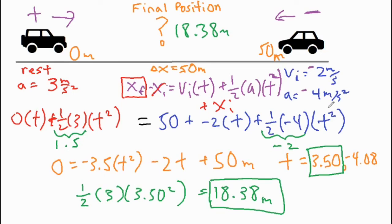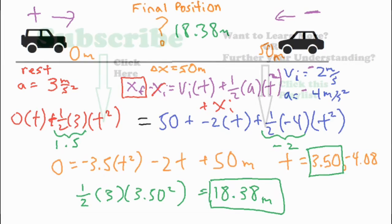That also lines up with what I predicted, because this car has a starting velocity and a greater acceleration. The midpoint of 50 meters would be 25, so you'd expect the car traveling in the negative direction to go past that midpoint — meaning the meeting point should be slightly under 25 meters, which it is at 18.38. I hope that was helpful in solving for the time and final position for two cars approaching each other and accelerating. Thank you for watching and listening.